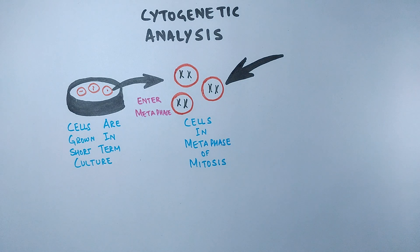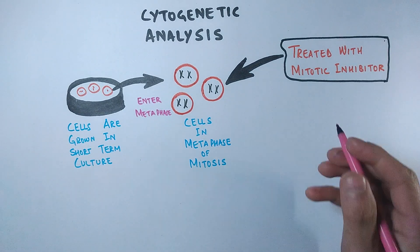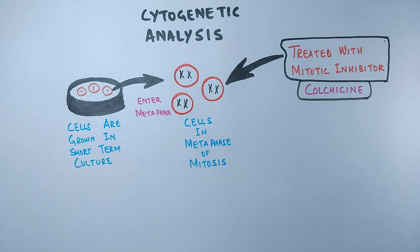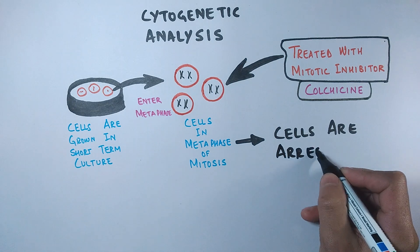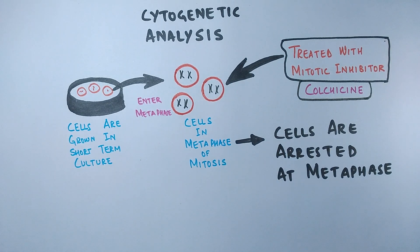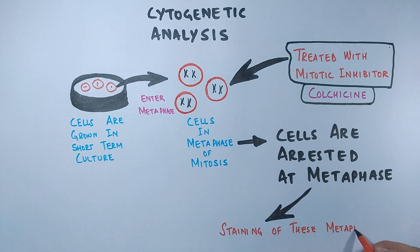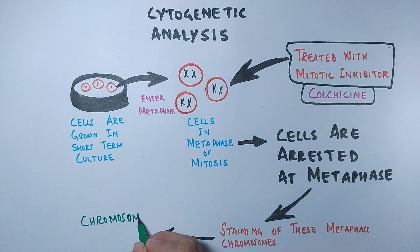To overcome this problem, the chromosomes are paused at the metaphase stage. The chromosomes are treated with a mitotic inhibitor like colchicine, which inhibits microtubule polymerization by binding to the tubulin component. In this way the cells are arrested at metaphase stage, and it is these metaphase chromosomes which are stained, completing our chromosome banding procedure.